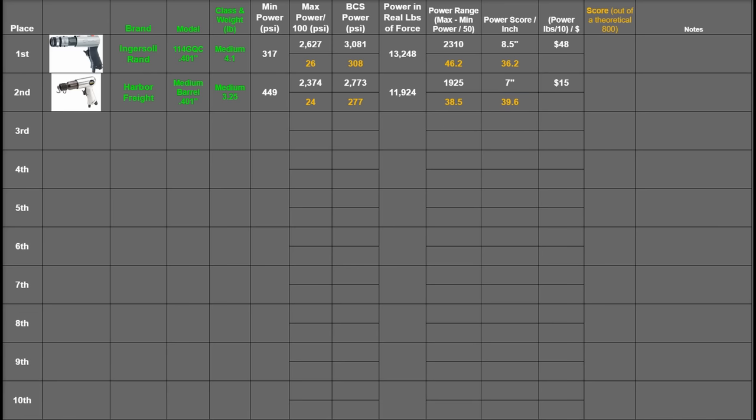When we're talking power per dollar, it's hard to ignore the Central Pneumatic being one-third or even less than one-third the cost of the IR. This column will be limited to 100 points max, but that doesn't stop the Harbor Freight from getting 79.5 points here versus the already very good 27.6 of the IR.